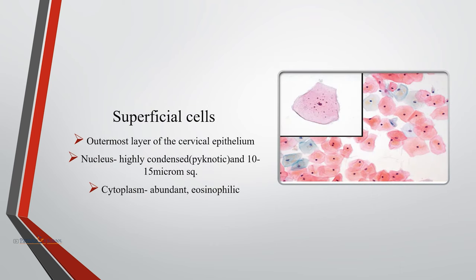Superficial cells are derived from the outer layer of the cervical epithelium. Their nucleus is highly condensed and pyknotic, with a nuclear cross-sectional area of 10 to 15 micrometers squared. Cytoplasm is usually abundant, eosinophilic, and may contain keratohyaline granules. Superficial cells are usually seen during the proliferative phase of the menstrual cycle and in the presence of irritation.